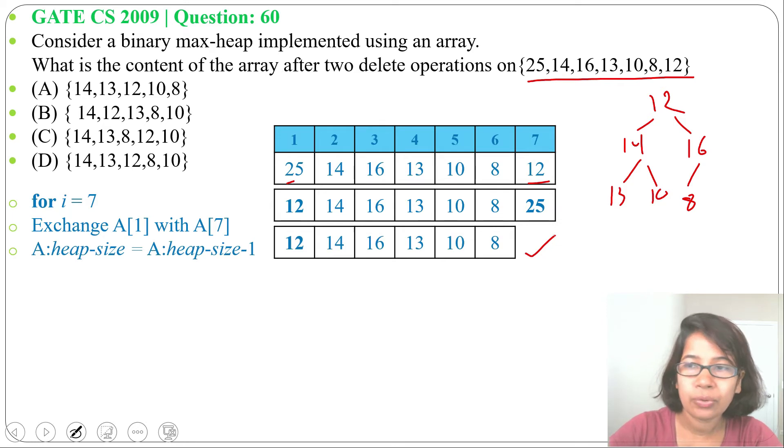Next we need to maxify root, means we need to maxify 12. So 12's children are 14 and 16. Which is the largest? 16 is the largest, we'll swap these two.